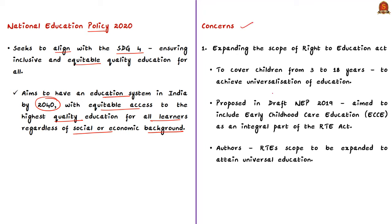The first concern raised is regarding expanding the scope of the Right to Education Act to cover children from three years to 18 years in order to achieve universalization of education. This was proposed in the draft National Education Policy 2019, which aimed to include early childhood care education as an integral part of the Right to Education Act. But the present policy is silent on this proposal, and the authors feel that only if the RTE Act's scope is expanded can universal education be attained.